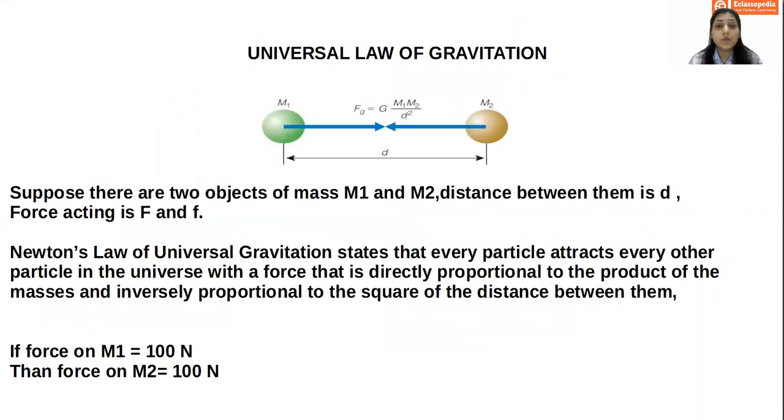And now let us check what is universal law of gravitation. Suppose here we have two objects. This is of mass M1 and M2 and distance between them is D and force acting is F. So we'll say that suppose this is object A and this is object B. Object A is having mass M1, object B is having mass M2 and distance between them is small d. Force acting here, we can say F and over here we can say small f.